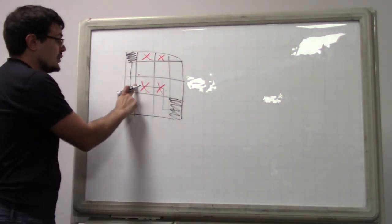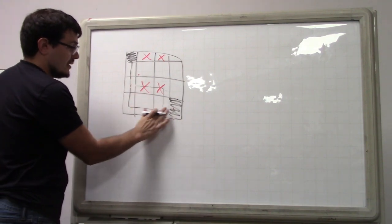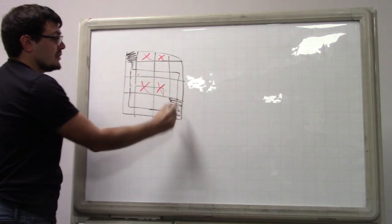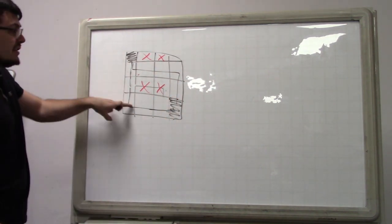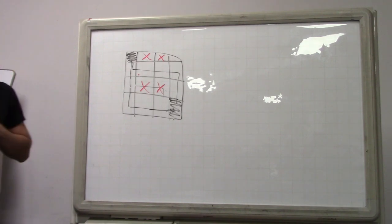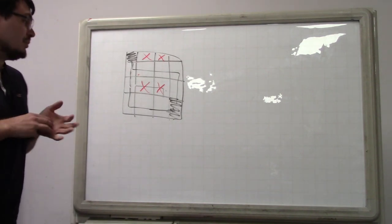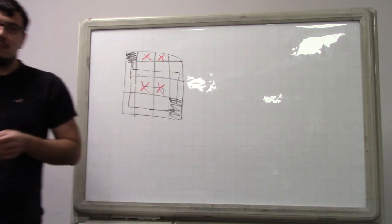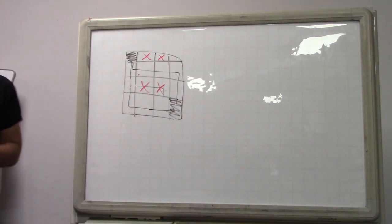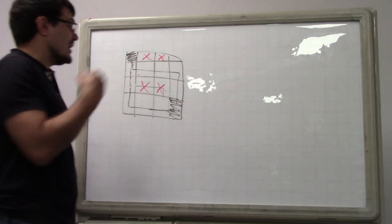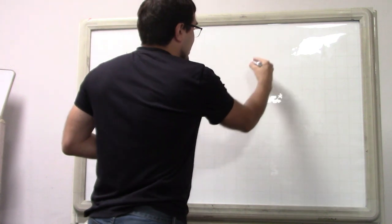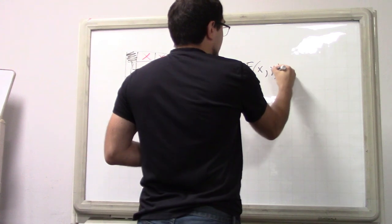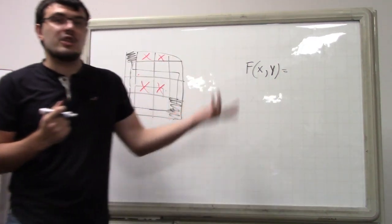For example, the answer in the shown example is two — there are two distinct paths. A good problem-solving strategy is to simplify first: what if you didn't have any blocked cells? It's actually pretty easy then. Let F(x,y) be the number of ways to reach the end from position x,y.